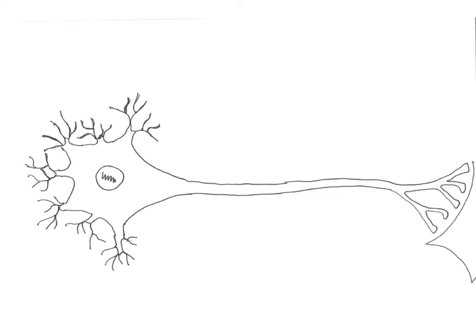This video is on synapses, neurotransmitters, and EPSPs and IPSPs. I want to do a very short review on the transmembrane potentials we've learned so far. We learned about the resting membrane potential of negative 70 millivolts in the neuron, caused by negatively charged proteins, leak channels — with more potassium leak channels than sodium — and the concentration gradients of both sodium and potassium.